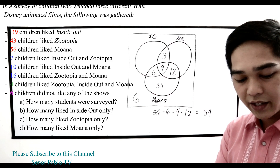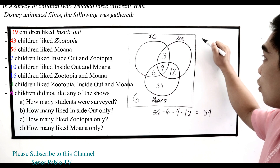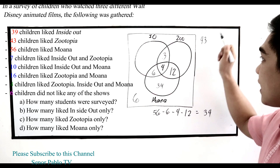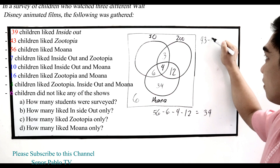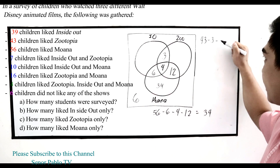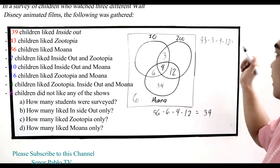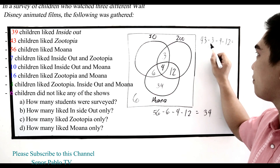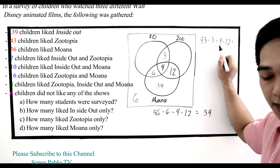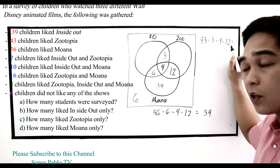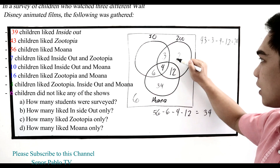Next, Zootopia: 43 like Zootopia. We subtract the intersections: minus 3 (Inside Out and Zootopia), minus 4 (all three), minus 12 (Zootopia and Moana). So 43 minus 3 equals 40, minus 4 equals 36, minus 12 equals 24. We write 24 in the Zootopia-only region.